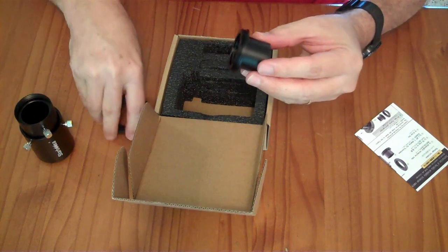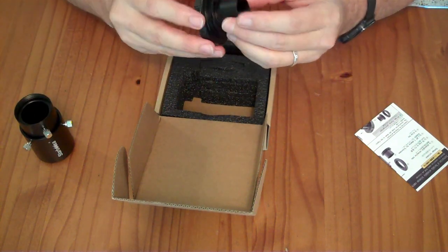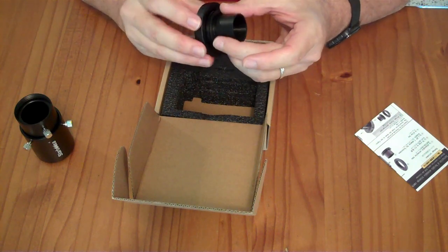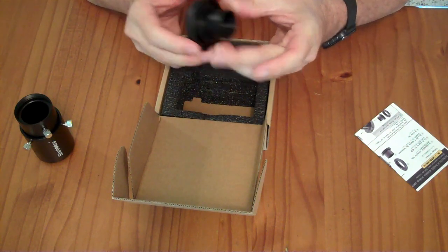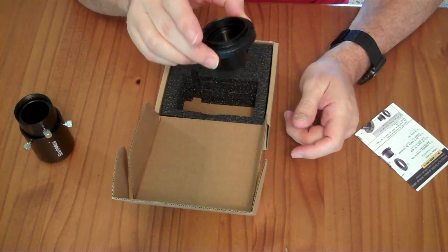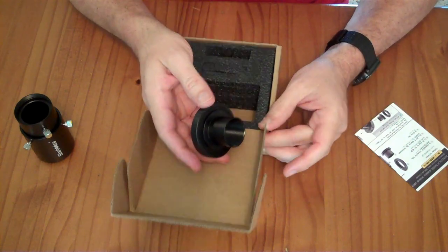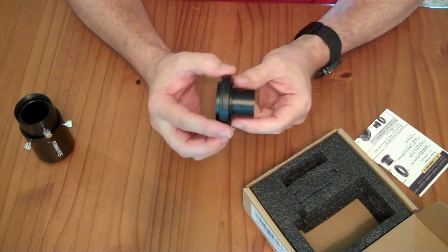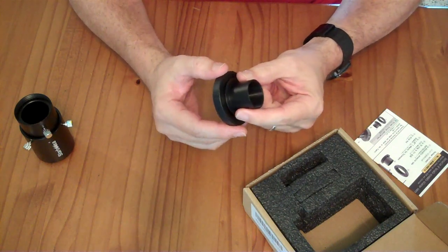The most common thing to attach is an eyepiece adapter like this. That eyepiece adapter will screw in here and allows you to simply put your camera in place of an eyepiece. That is called prime focus, where essentially you're just using the telescope as a long lens on your camera.